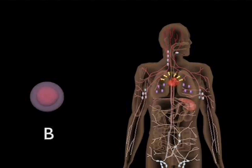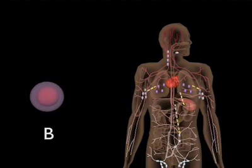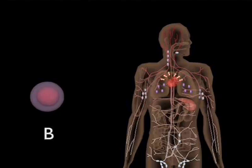They will continue to circulate between secondary lymphoid tissues until they encounter an antigen which the lymphocyte receptor can recognize, or they die.